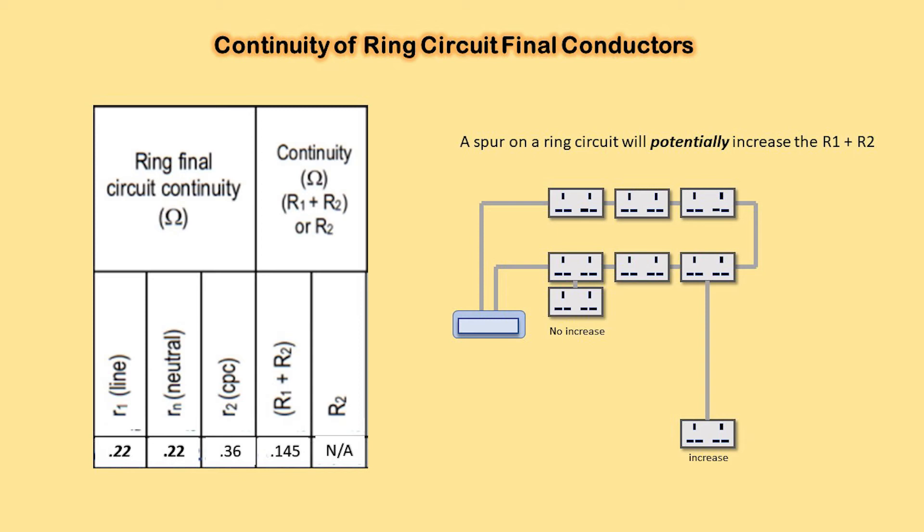Spurs on a ring circuit may increase the R1+R2 of a circuit. This would depend on location of the spur and length of cable, and need to be taken into account.